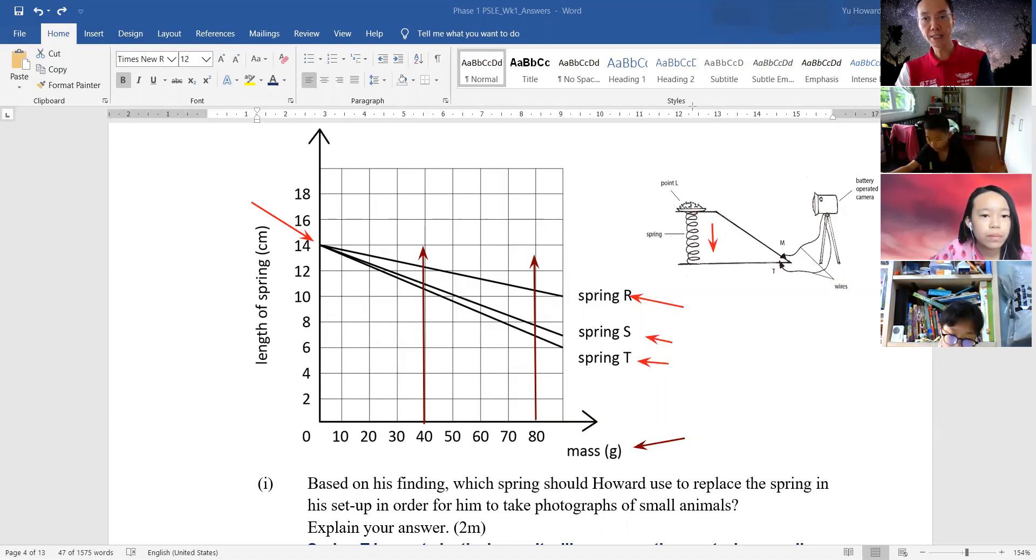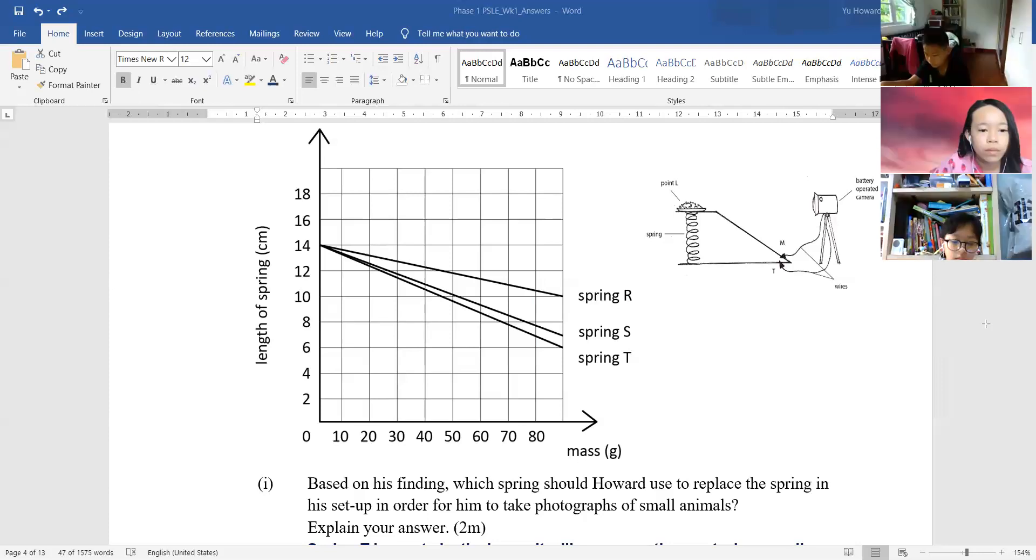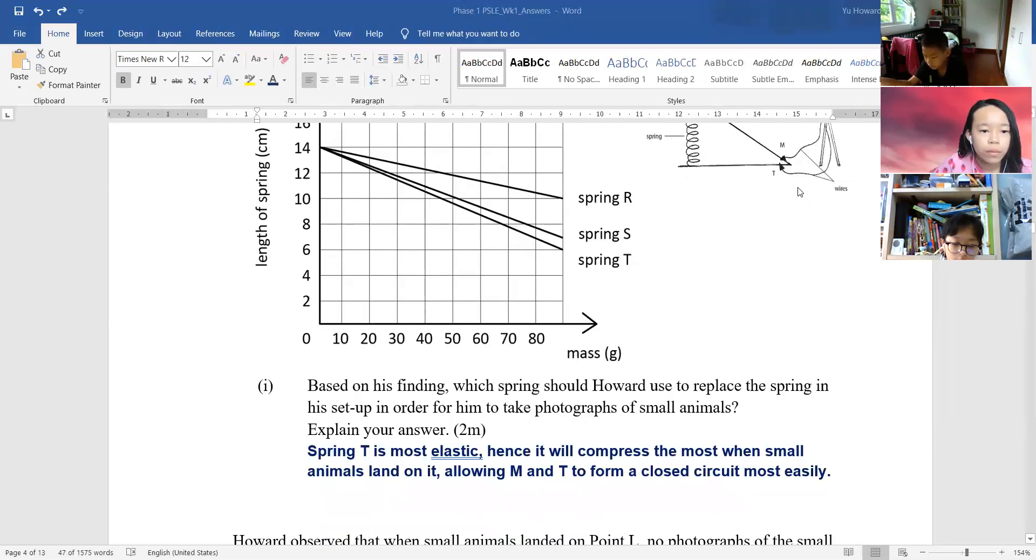Let me choose one person. Who haven't read? Maybe I ask Chloe. Chloe, can you read out the answer? Spring T is most elastic hence it will compress the most when small animals land on it allowing M and T to form a closed circuit most easily.